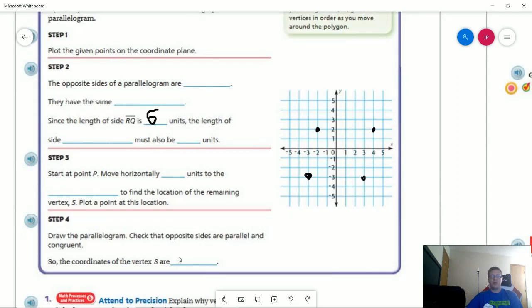So the coordinates of this vertex would be negative 2, positive 2. And so that would be the ordered pair for that.